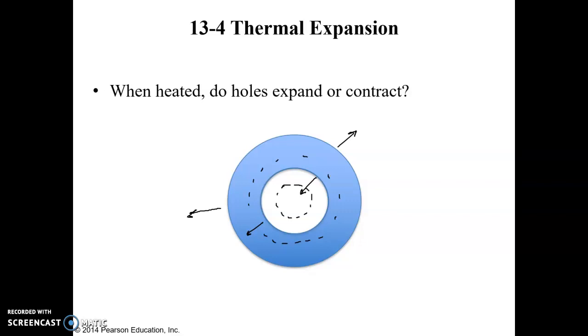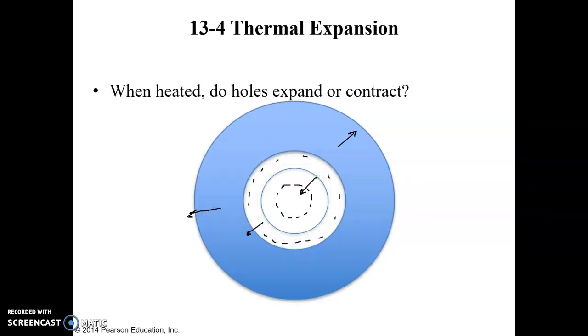But anyone who's had to try to get off a stuck nut by heating it with a torch knows that when you heat that nut, it is going to expand. The hole in the middle is going to expand. So for a donut-shaped object, it's the second train of thought that is correct. The overall expansion of the material just increases the overall diameter, which more than compensates for any inward expansion. So the inside diameter does get larger when heat is applied.